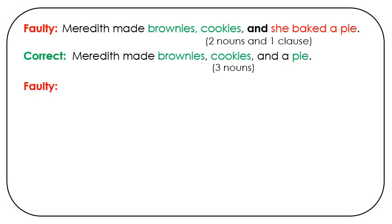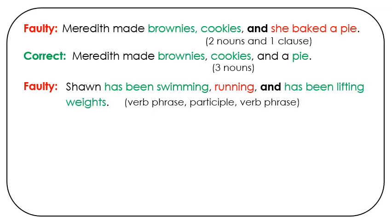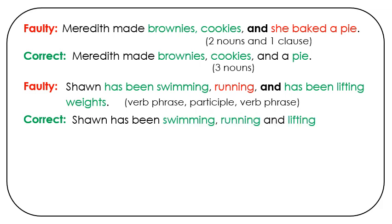Here's another faulty sentence: Shawn has been swimming, running, and has been lifting weights. We have a verb phrase, a participle, and a verb phrase. The correct version: Shawn has been swimming, running, and lifting weights. There we have three participles.